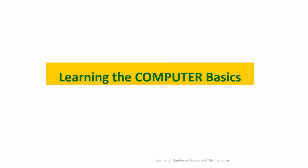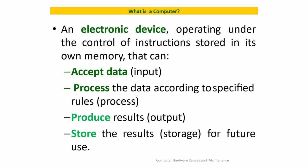We will start by defining a computer. A computer is an electronic device operating under the control of instructions stored in its own memory. A computer performs only four things: it accepts data as input, it processes the data according to specified rules which are the programs, it produces results as output, and lastly it stores the results for future use.